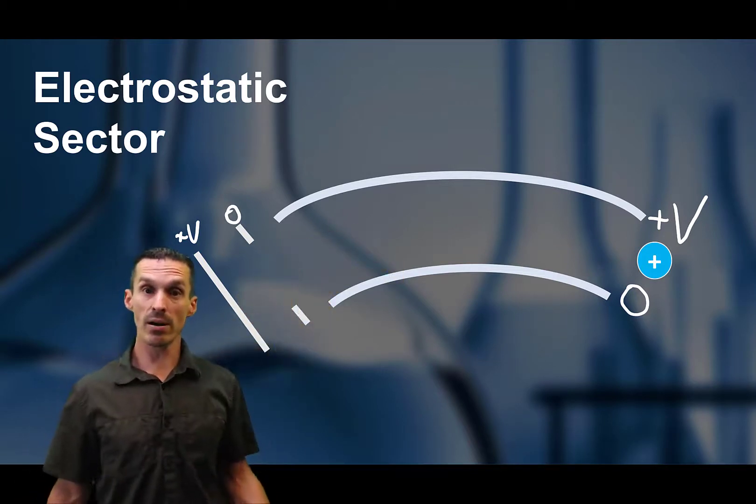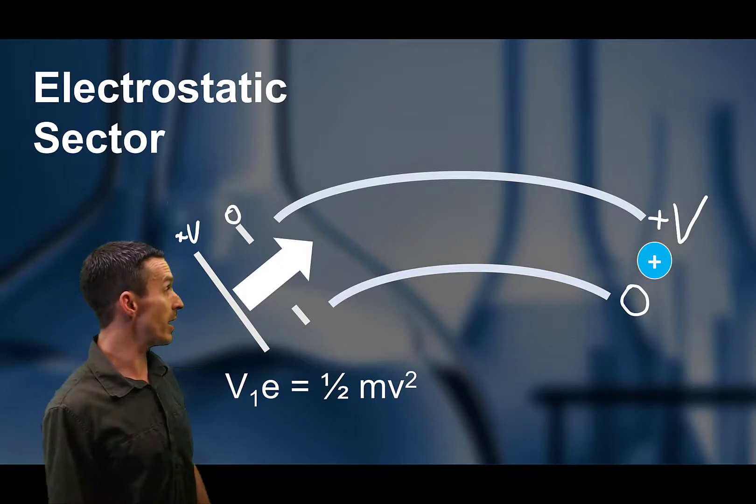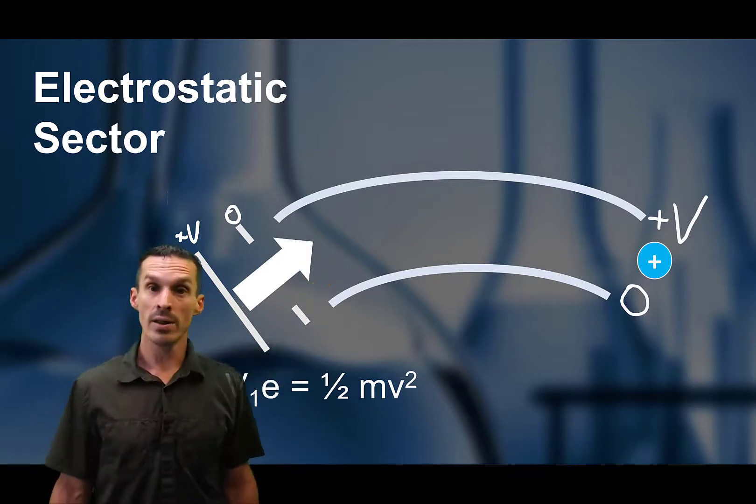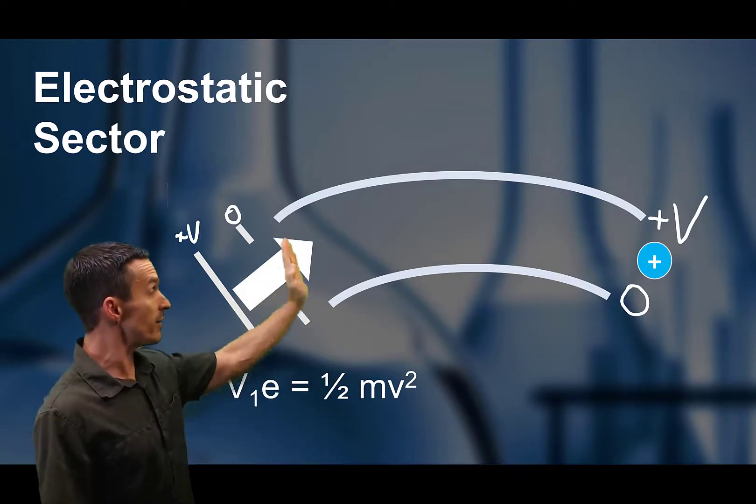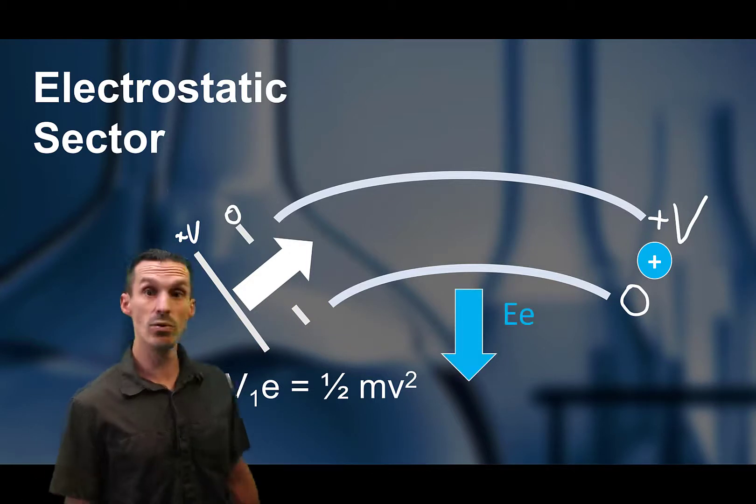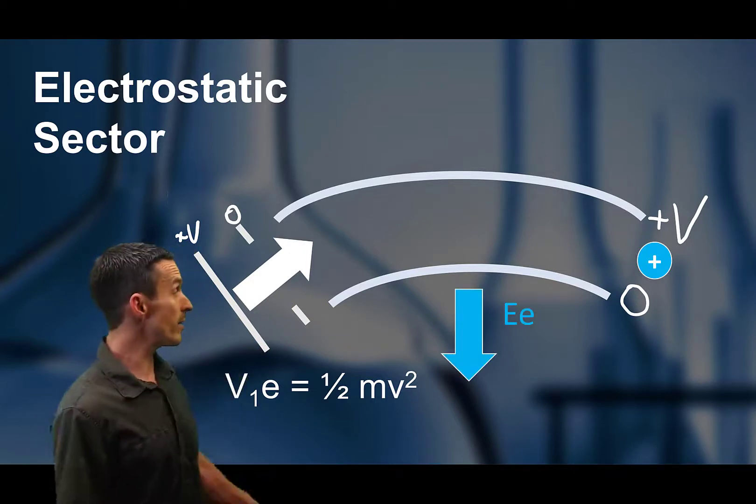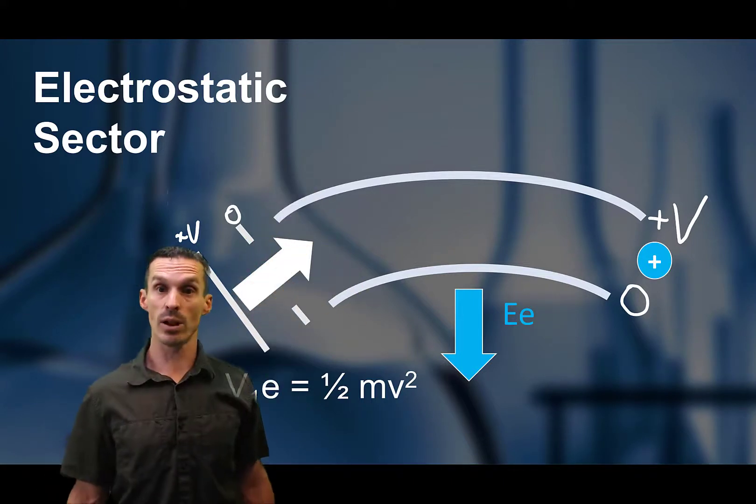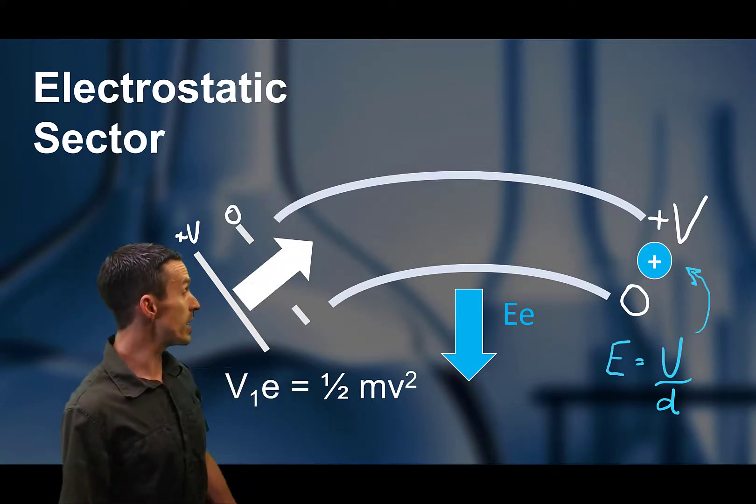So let's think about all the forces at play here. First, we have the kinetic energy, one half mv squared. That's related to that initial plate, the V over here. So because that charged ion is moving in this electric field, we're going to have a force pushing down on it as well. And remember that electric field is volts per centimeter.